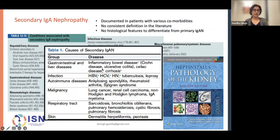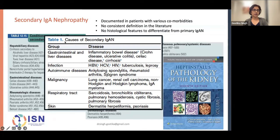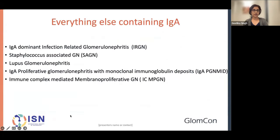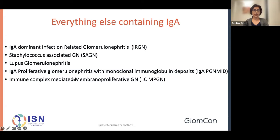This abridged list from the latest core curriculum importantly places GI and liver diseases at the top. For the pathologist, not everything containing IgA is IgA nephropathy — we have a host of differential diagnoses including IgA-dominant IRGN, a subset of which would be staph-associated GN, lupus GN, IgA PGNMID — which is proliferative glomerulonephritis with monoclonal immunoglobulin deposits, usually IgG3 kappa but sometimes IgA-containing — and some cases of ICMPGN as well.